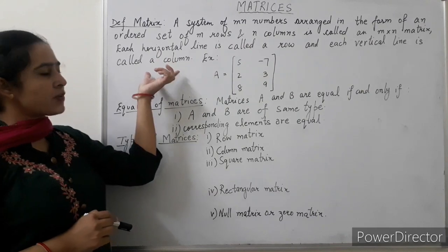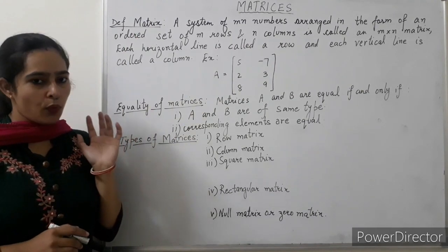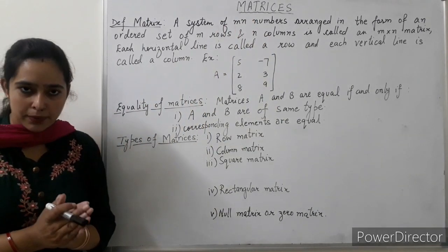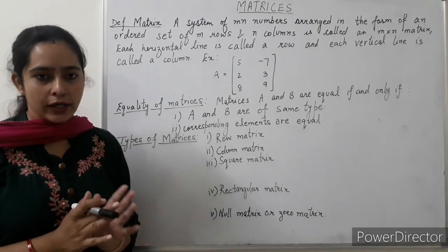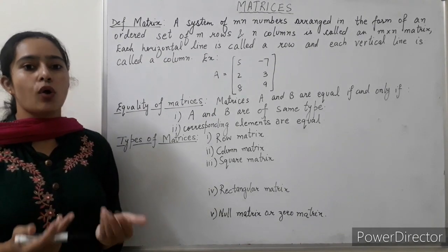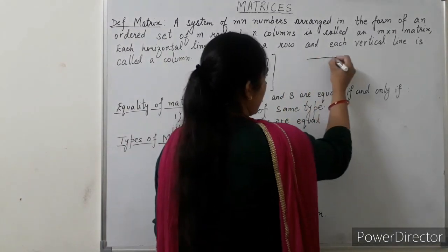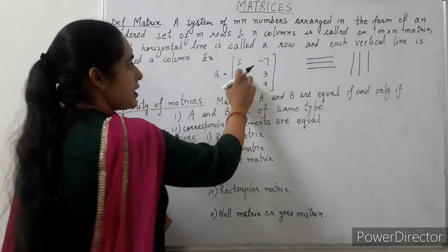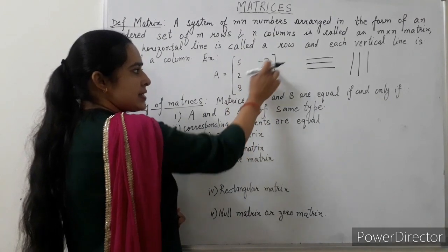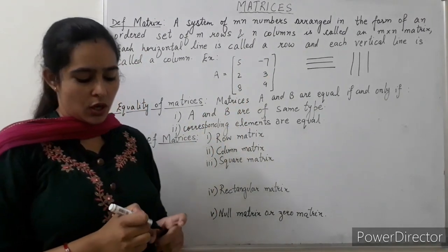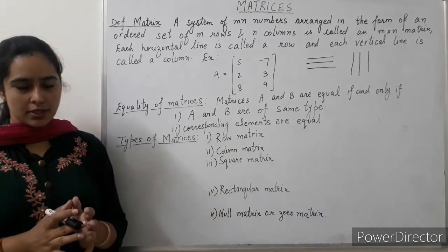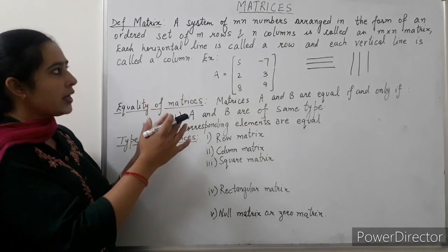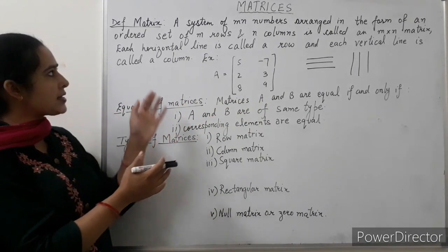What this definition says — what is a matrix? Just suppose we have MN numbers and we have to arrange these numbers in the form of rows and columns. Now what are rows and what are columns? Horizontal lines are called rows and vertical lines are called columns. So whenever we arrange some numbers in the form of rows and columns, this arrangement is known as a matrix.